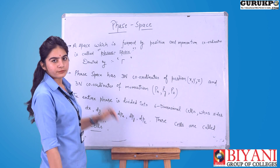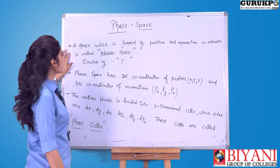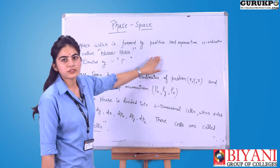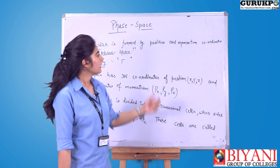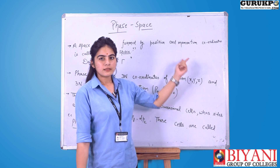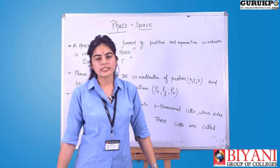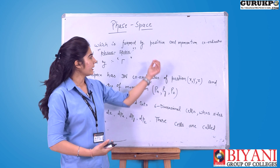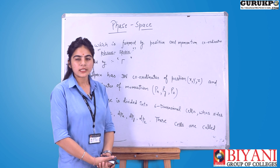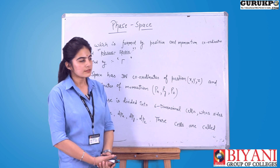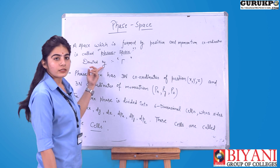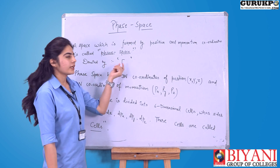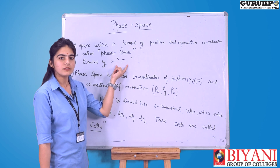First of all, what is phase space? A space which is formed by position and momentum coordinates. Momentum coordinates are denoted by px, py, pz, and position coordinates are denoted by x, y, and z. Phase space is denoted by the symbol nu.